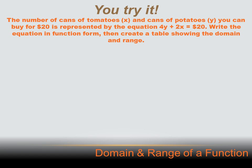I just love tomato and potato jokes and stories. So we're going to do another one. In this problem, the number of cans of tomatoes, which we'll call x, and the number of cans of potatoes, which we'll call y, that you can buy for $20 is represented by the equation 4y plus 2x equals $20. Write the equation in function form and then create a table showing the domain and range.